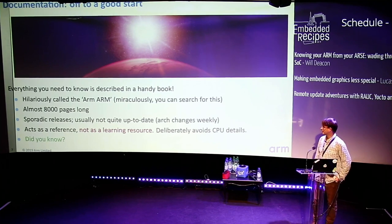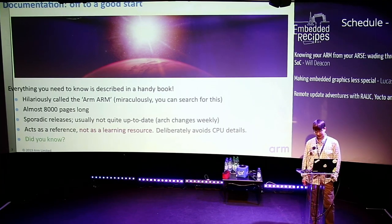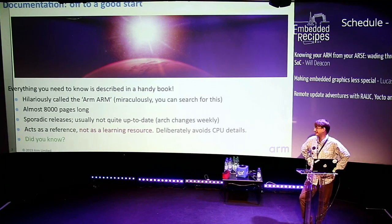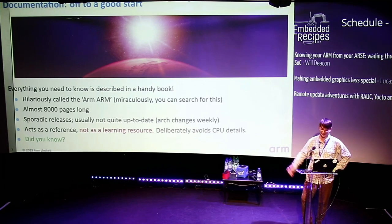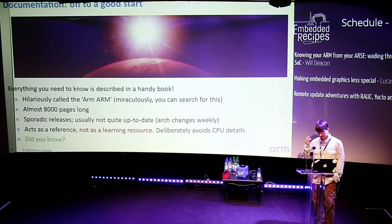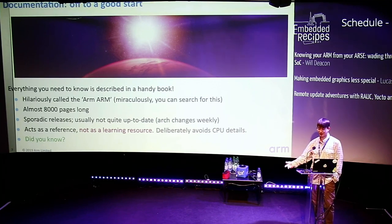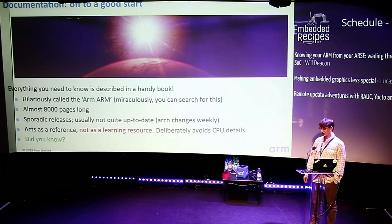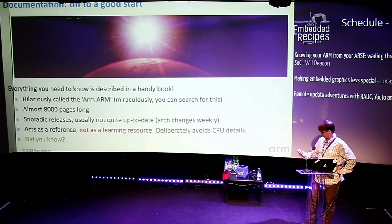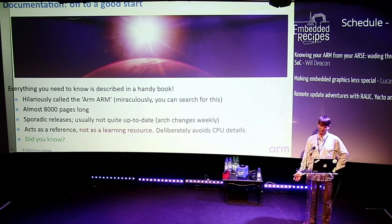You might think it's all written down, so we can just go and read the documentation. There's this big book called The Arm ARM - the Arm Architecture Reference Manual. It's 8,000 pages long, written in Arm-glish - this style of prose which is fact after fact after rule. It's mostly up to date, but the release schedule is sporadic. It's not intended to be a learning resource, which is annoying. It also deliberately avoids going into CPU implementation details - no mention of store buffers or reorder buffers.